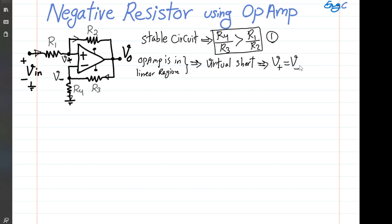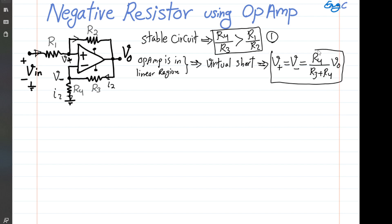The voltage at the negative input terminal is simply a voltage division from Vout across R3 and R4. Any current I2 passing through R3 must be the same current going through R4, because ideal op-amp has infinite input impedance. So R3 and R4 are effectively in series, and V minus equals R4 over (R3 plus R4) times Vout. This is Equation 2.